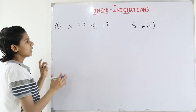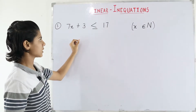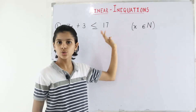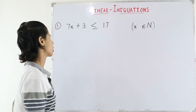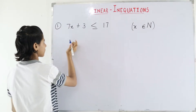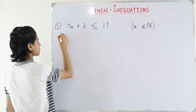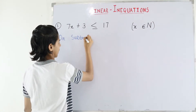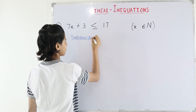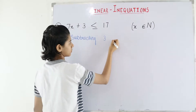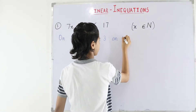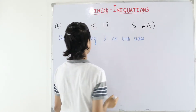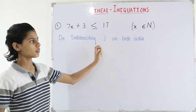Now how do we solve this? If we have a variable with another number, we change it to the opposite side by transposing. But here we have to write the statement. On subtracting 3 on both sides.